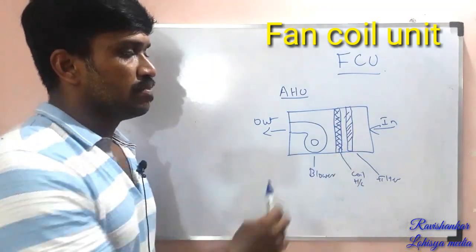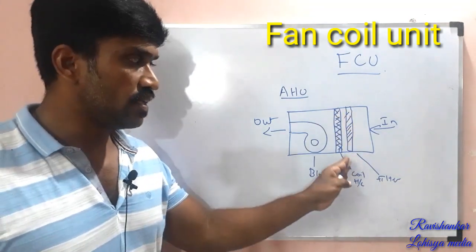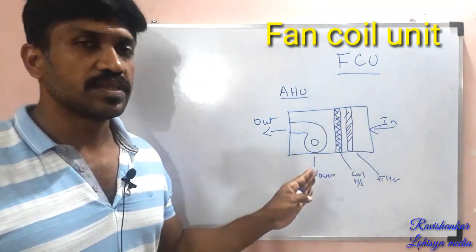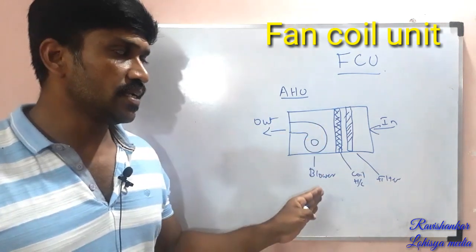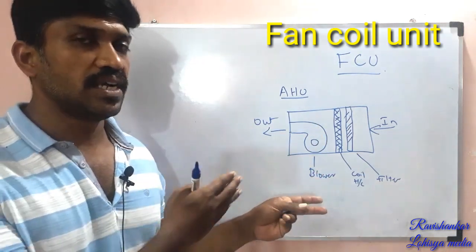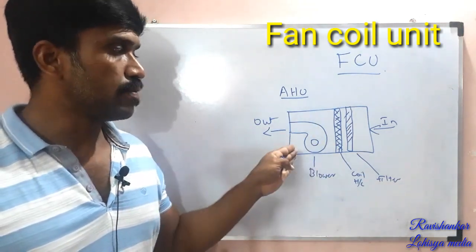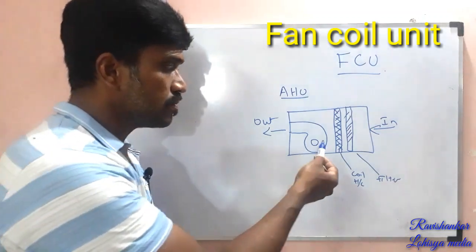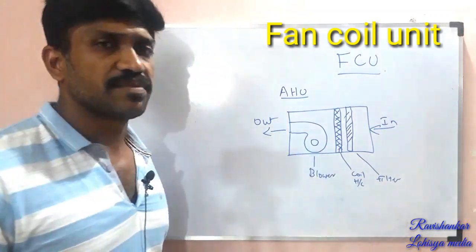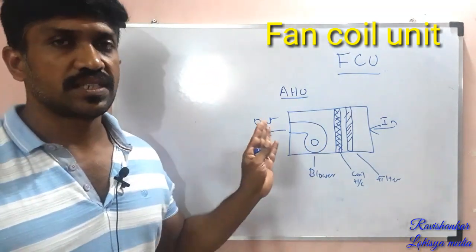This is the filter unit. This is the coil unit. This is the heating and chilled coil. This is the blower. This is the motor. This is the AHU construction.